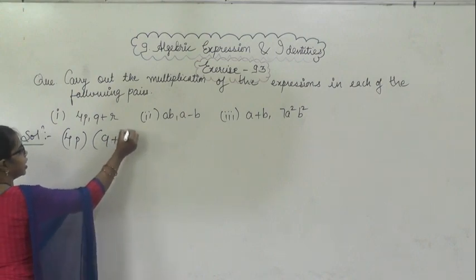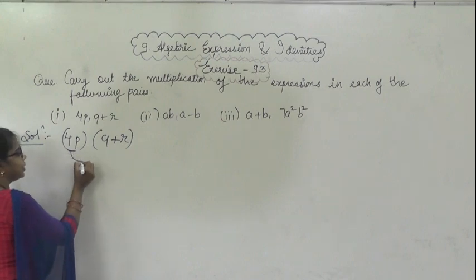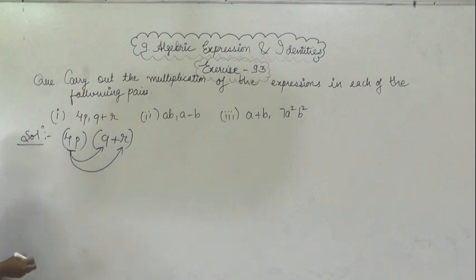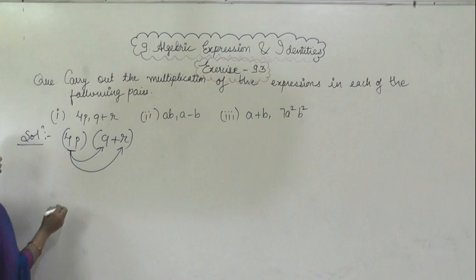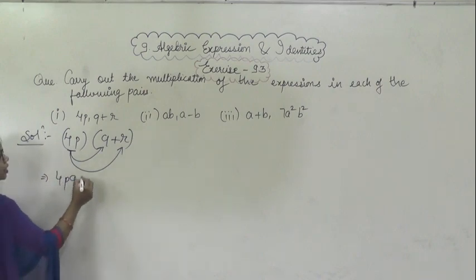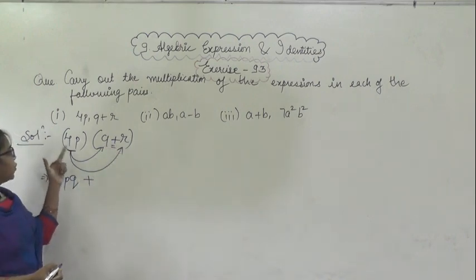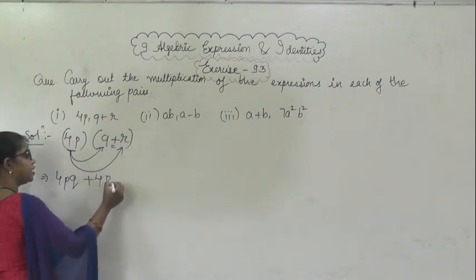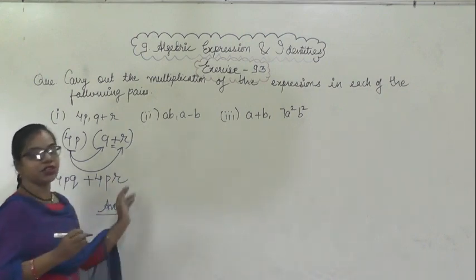First, this term 4p will be multiplied with q, and again with r. So first, 4p into q gives us 4pq, then plus sign comes, and again 4p into r gives us 4pr. This is the answer.